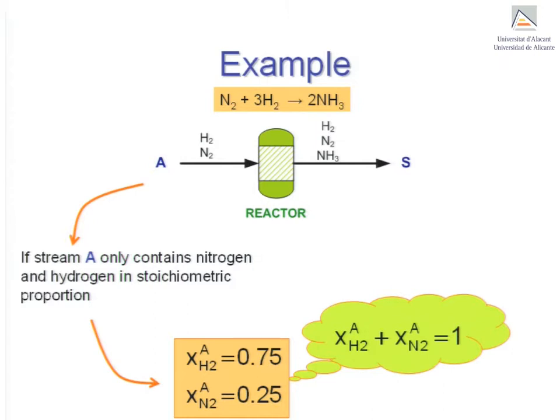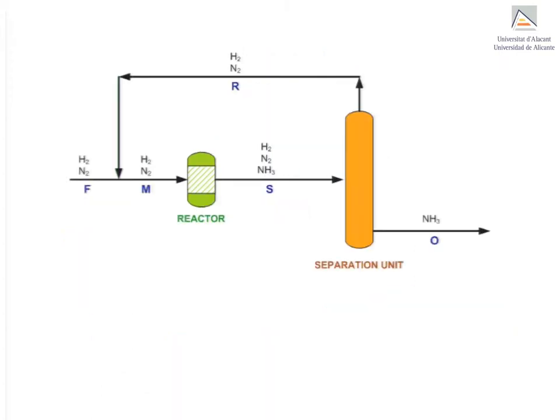Now let's complicate matters a little. Say we include a separation unit that splits stream S into two new streams, one containing all the ammonia formed and the other containing the unreacted reactants.